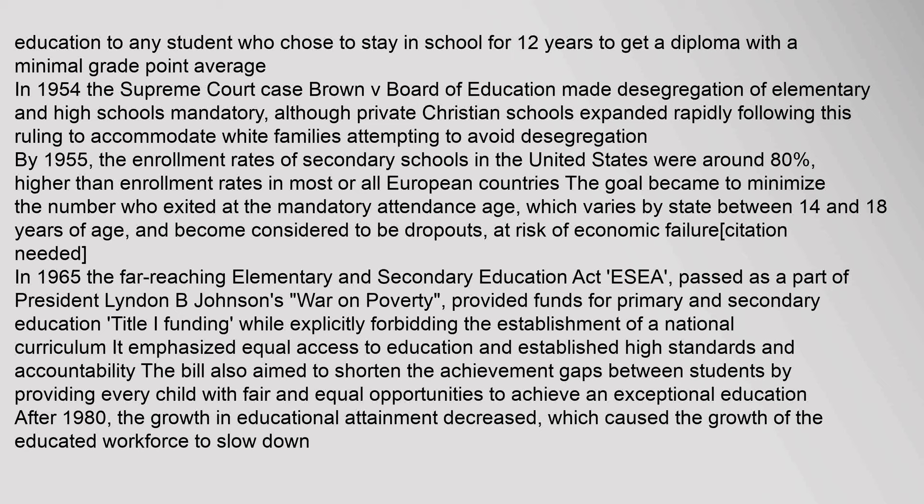In 1965, the far-reaching Elementary and Secondary Education Act, passed as part of President Lyndon B. Johnson's War on Poverty, provided funds for primary and secondary education while explicitly forbidding the establishment of a national curriculum. It emphasized equal access to education and established high standards and accountability. The bill also aimed to shorten the achievement gaps between students by providing every child with fair and equal opportunities to achieve an exceptional education. After 1980, the growth in educational attainment decreased, which caused the growth of the educated workforce to slow down.